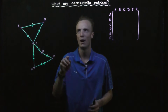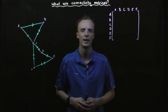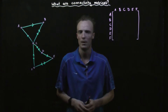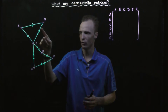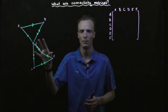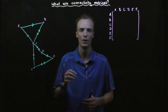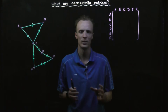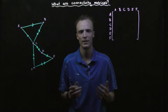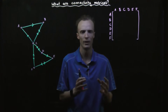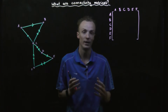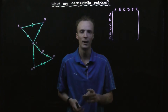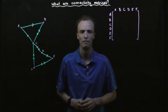In this video, I'm going to have a look at what connectivity matrices are. Over here, I've got a diagram showing the different connections that exist between different points that we refer to as nodes. What a connectivity matrix helps us show is the number of different routes that exist between nodes given a certain number of steps, the most common being if we are only allowed to take one step.